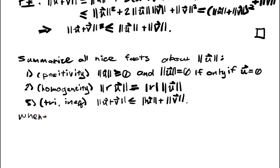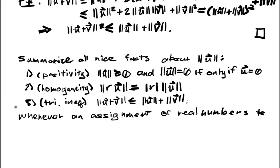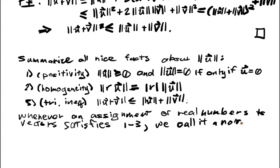And whenever an assignment of real numbers to vectors satisfies properties 1 through 3, we call it a norm. Which is why I've been calling it a norm this entire time. Because it satisfies these three properties, and these three properties you can kind of abstractify them, and that's why they're very useful.